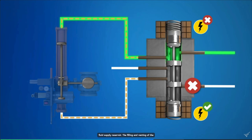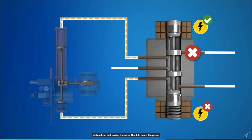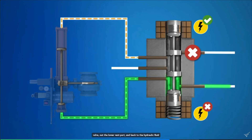The filling and venting of the actuator's cylinder are reversed by de-energizing the lower solenoid and energizing the upper solenoid. When the upper solenoid is energized, it pulls the spool up, blocking the upper vent ports and lower supply ports. Hydraulic fluid is supplied to the top of the actuator's cylinder, pushing the piston down and closing the valve. The fluid below the piston is vented through the lower fluid line, back through the pilot valve, out the lower vent port, and back to the hydraulic fluid supply reservoir.